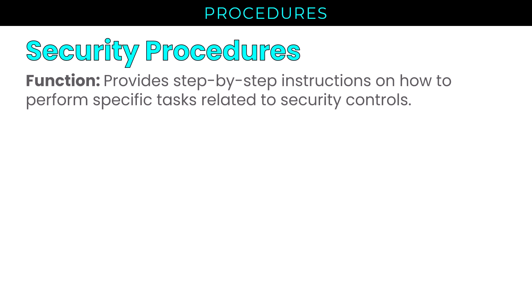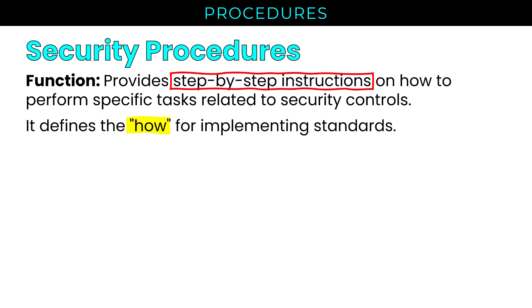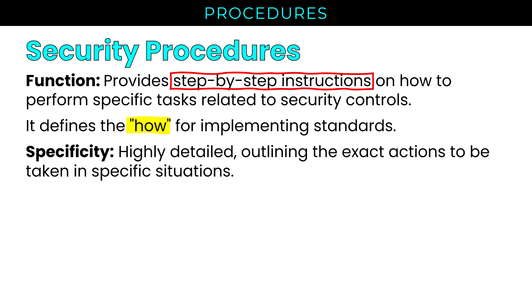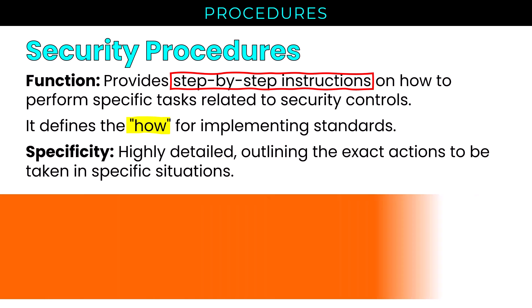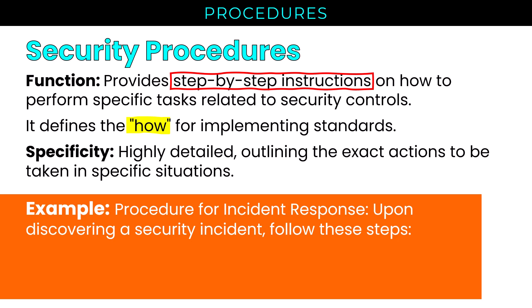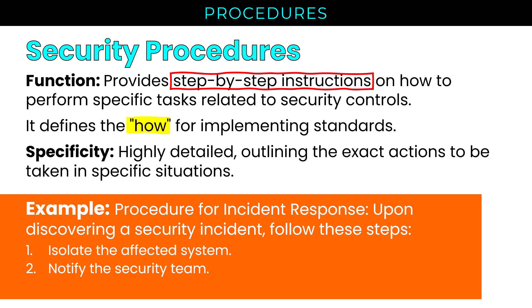Moving on to procedures. Security procedures provide step-by-step instructions on how to perform specific tasks related to security controls — defining the 'how' for implementing standards. Procedures are highly detailed, outlining the exact actions to be taken in specific situations. A simple example is a procedure for incident response: upon discovering a security incident, follow these steps — isolate the affected system, notify the security team, document the incident. No doubt the subtasks beneath each of these steps would also be detailed in that procedure.